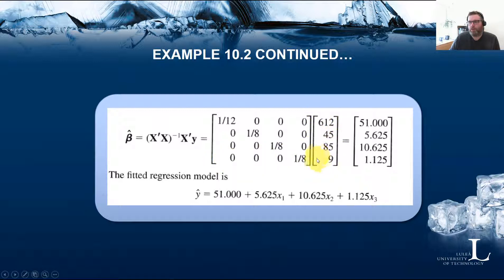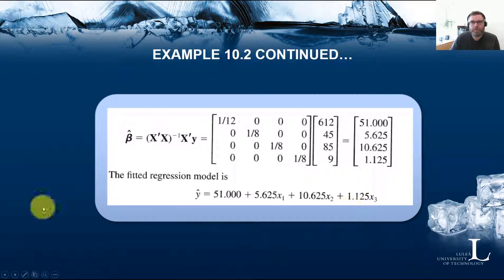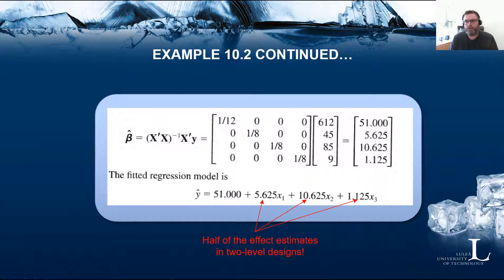Multiplying the inverse by the X transpose Y column vector gives the beta values: 51, 5.625, 10.625, and 1.125. The resulting fitted regression model is: 51 plus 5.625 times X1 plus 10.625 times X2 plus 1.125 times X3. Also remember that these beta values in the two-level factorial design setting are one half of the effect estimates for the corresponding main effects.